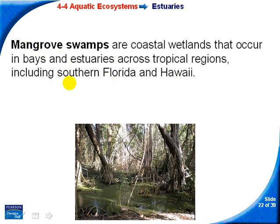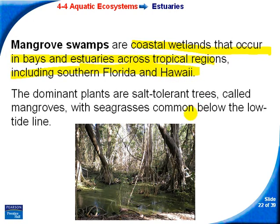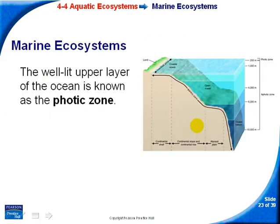Mangrove swamps are coastal wetlands that can be found in places like Florida and Hawaii. They require salt-tolerant trees called mangroves, along with sea grasses below the low tide line.